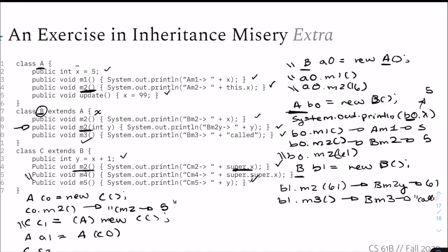Then 'A a1 = (A) c0' — this is fine because c0 is already of type A. We don't even really need to cast it, but it works. Then 'C c2 = (C) a1'. Since a1 contains a C object — it was initialized as new C() and stored in an A box — casting it back to C works. a1 is actually a C object masquerading as an Animal. So by casting it as a C, we confirm there really is a C in here. This checks out perfectly fine.